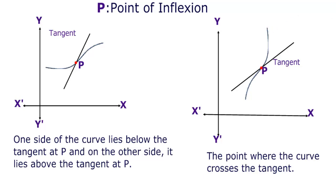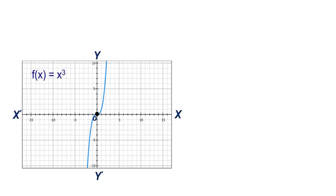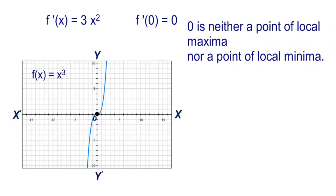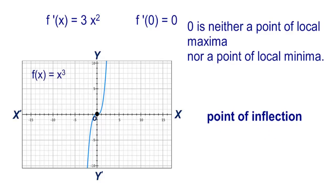One more way of saying the same is: the point where the curve crosses the tangent. Consider one more example: the function f(x) equal to x³. So f'(x) is equal to 3x². It follows that f'(0) is equal to 0. Although f'(0) is equal to 0, observe that at x equal to 0 — that is, at the origin — this point is neither a point of maxima nor a point of minima. Therefore, 0 is neither a point of local maxima nor a point of local minima, but it is a point of inflection. Hence, we have discussed stationary, critical, and points of inflection.